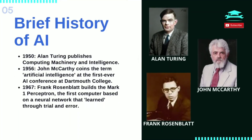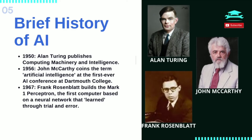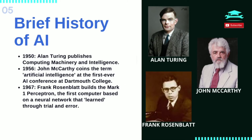In 1950, Alan Turing published Computing Machinery and Intelligence. In the paper, Turing proposes to answer the question, can machines think? He introduces the Turing test to determine if a computer can demonstrate the same intelligence as a human. The value of the Turing test has been debated ever since.